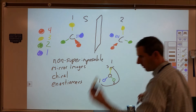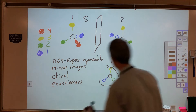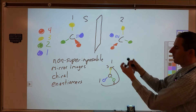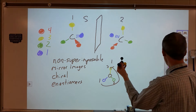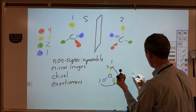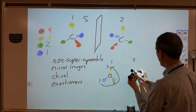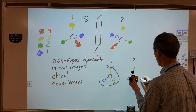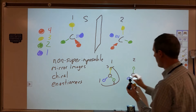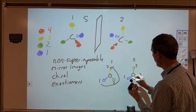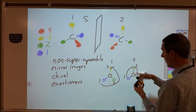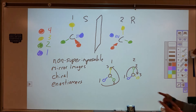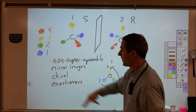For compound two, I do the same thing. I position myself so I'm looking down through the carbon to priority four — through the red. When I do that, I have carbon in the middle, green going up, blue coming down to the left, and yellow down to the right. I label priority one, priority two, priority three. When I do that, I move in a clockwise rotation, which gives us the orientation of R. So R and S are used to distinguish between two enantiomers for a compound that is chiral.